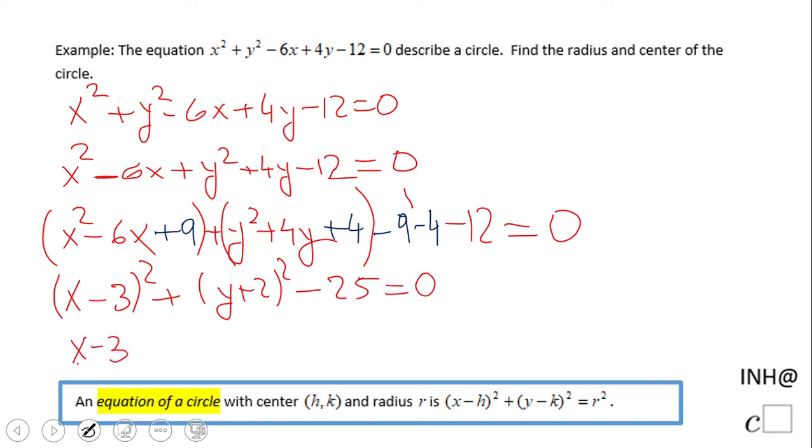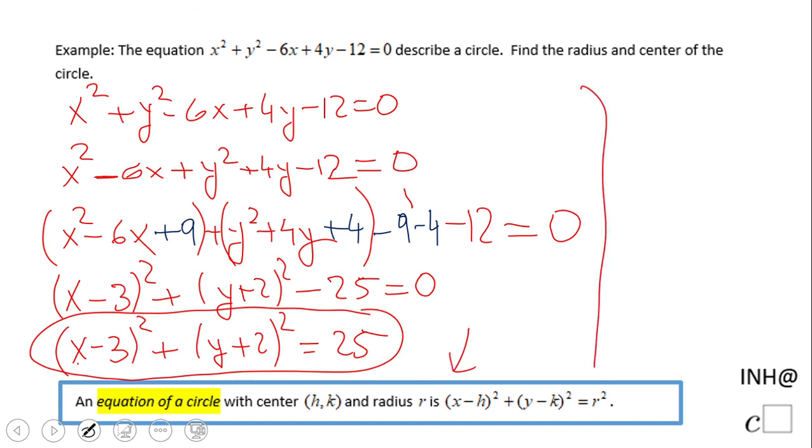We have one more thing to do: add 25 on both sides. And we're going to get this form, which now looks so similar to what you see down here, and that allows us to find the center.